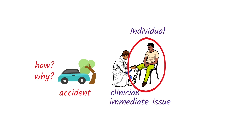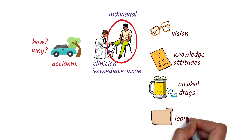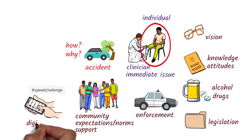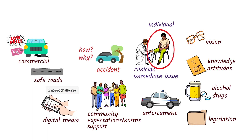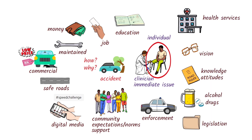For example, why did he have the accident? Was there a problem with his vision? Did he have inadequate driving skills or a poor attitude towards driving? Was he under the influence of alcohol or drugs when he was driving? Were there laws against this and resources to enforce it? What were the community expectations or norms around driving? Did he have a good social support network to help his recovery and prevent this from happening again? Did digital media contribute to the accident? Was the road he was driving on safe? Were there any commercial factors such as vehicles in the market with inadequate safety features? Was he driving a car that was well-maintained? If not, why not — could he not afford it? Did he have a job that didn't pay well? Was it because he didn't have access to a good education? Were there good health services to support his treatment and recovery, and were they accessible?